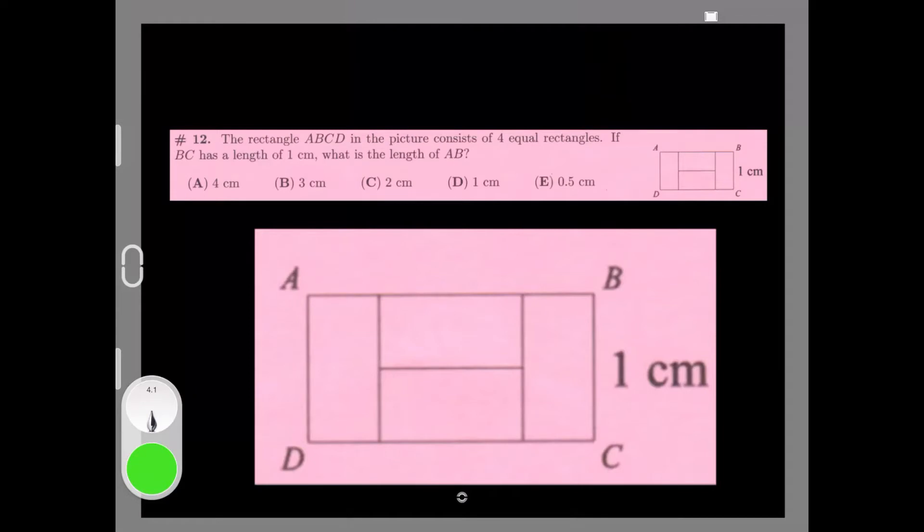The rectangle ABCD in the picture consists of 4 equal rectangles. If BC has the length of 1 cm, what is the length of AB? This is a bigger picture of the picture that they gave. If this length right here is 1 cm, that would make these two smaller sides of the rectangle both 0.5. Now, if we look at AB, it is a line with one long side and two small sides. So it'll be 0.5+1+0.5=2.